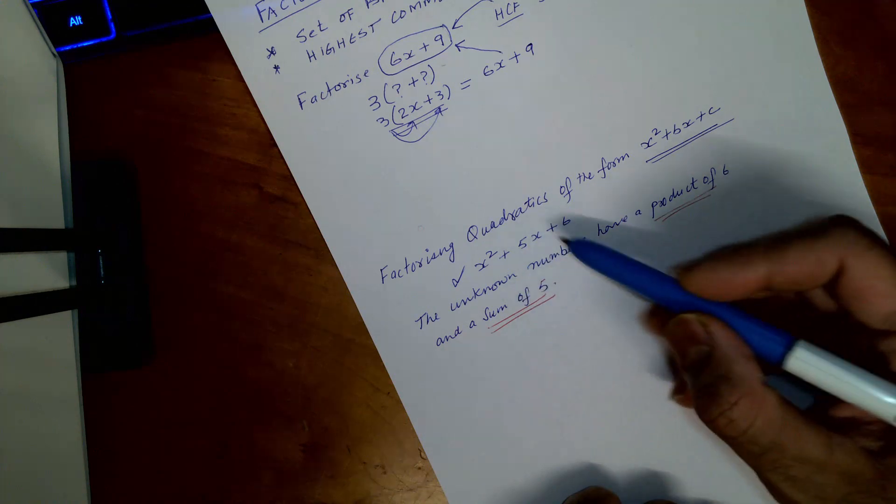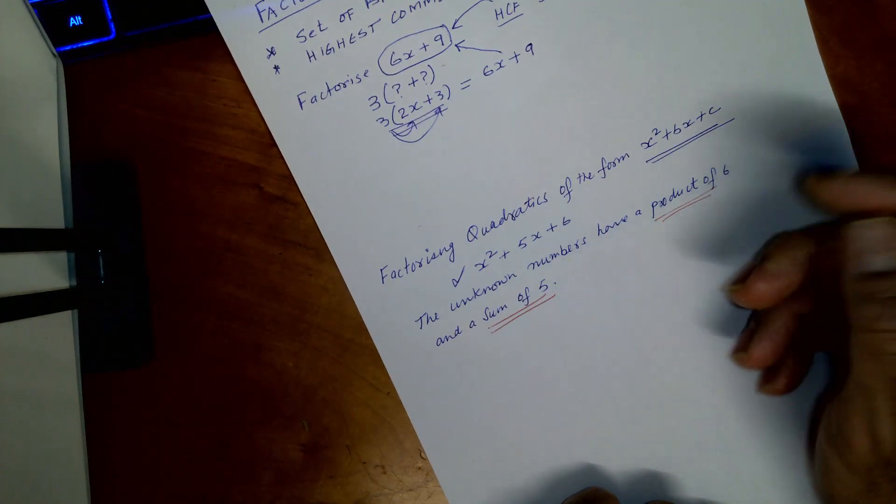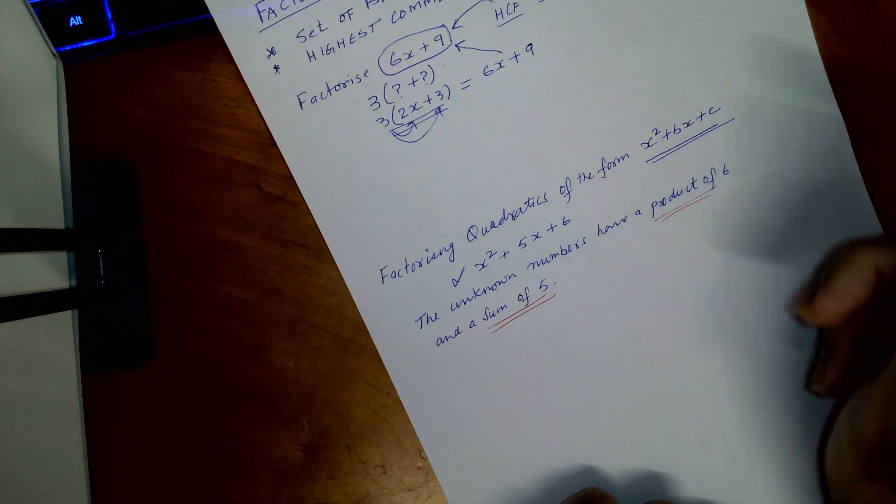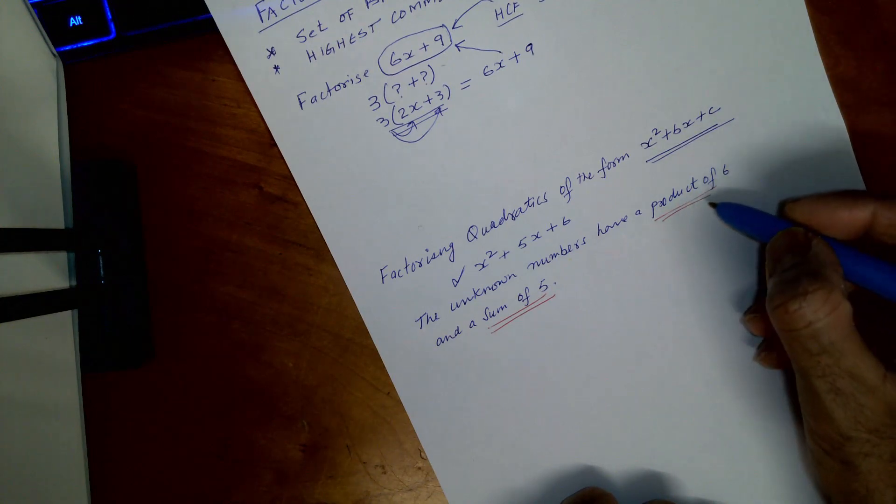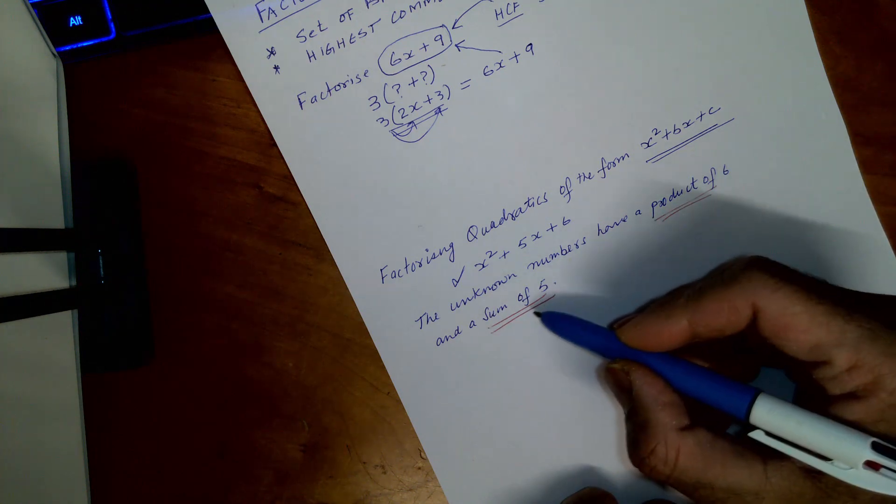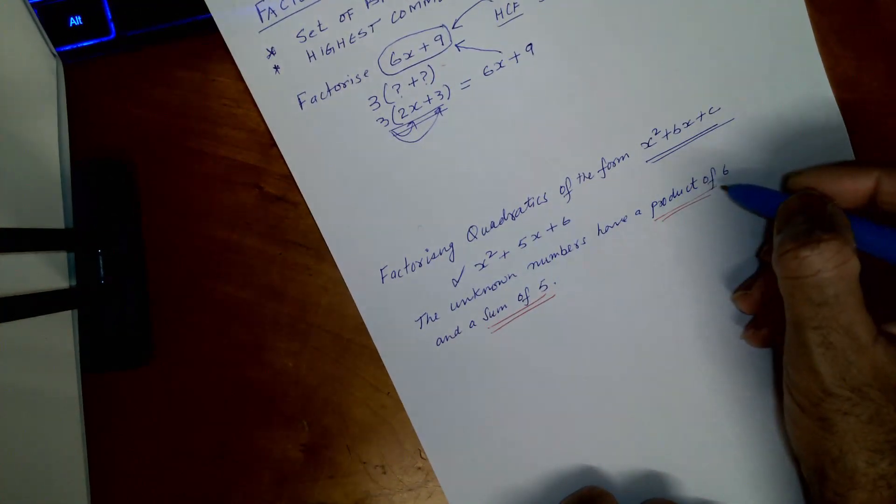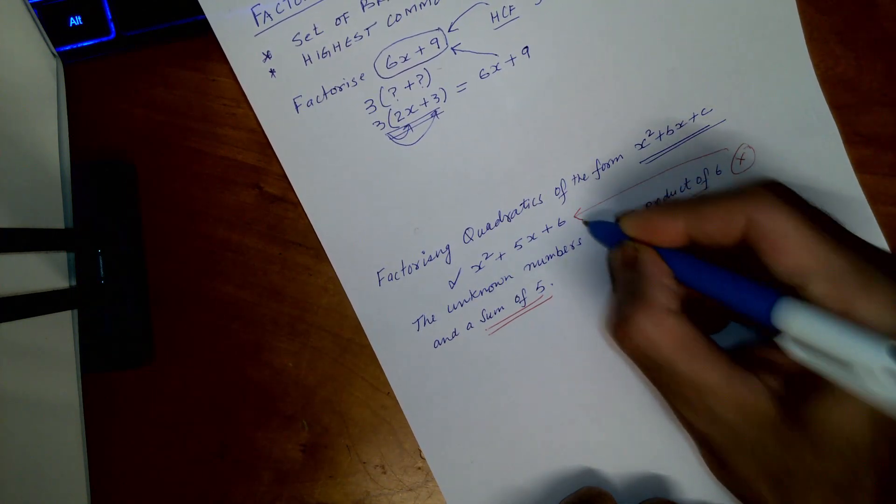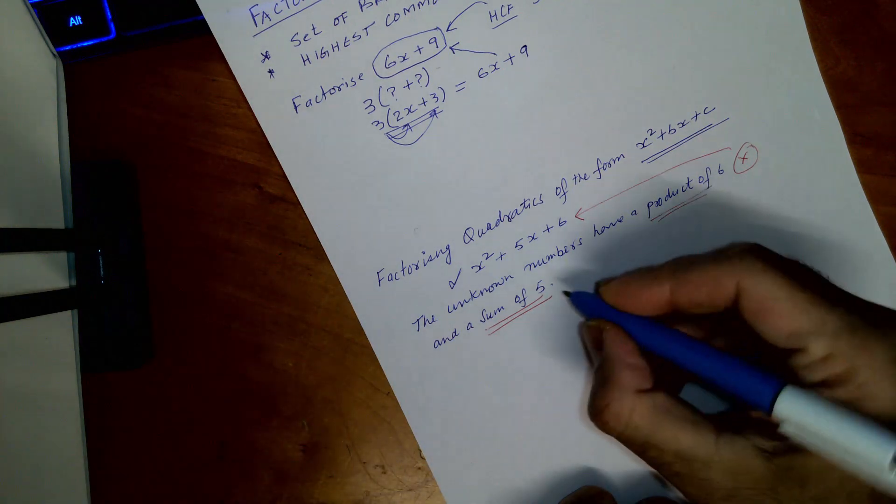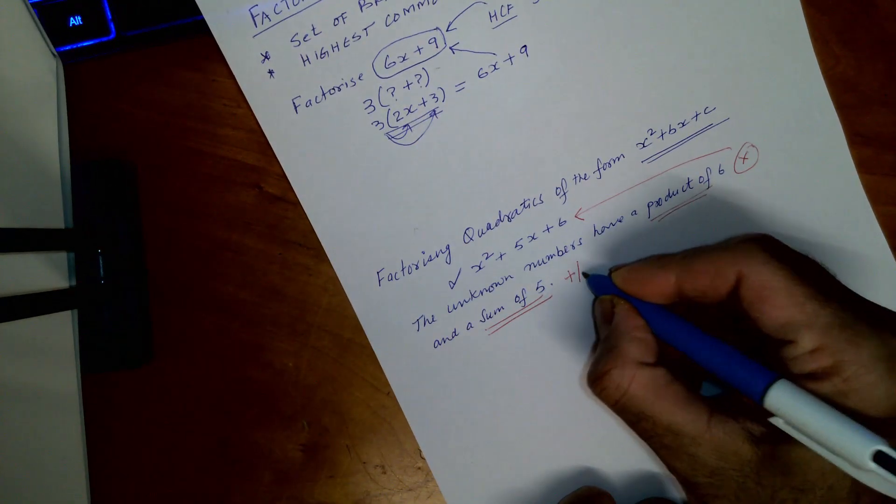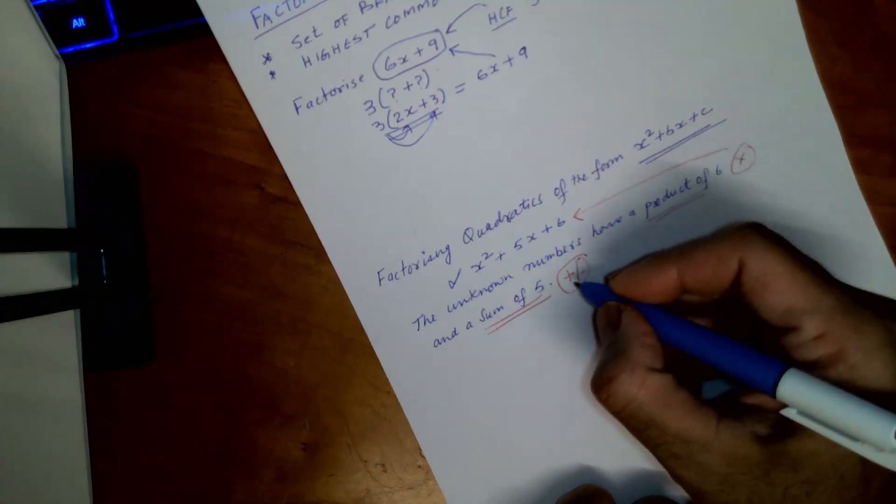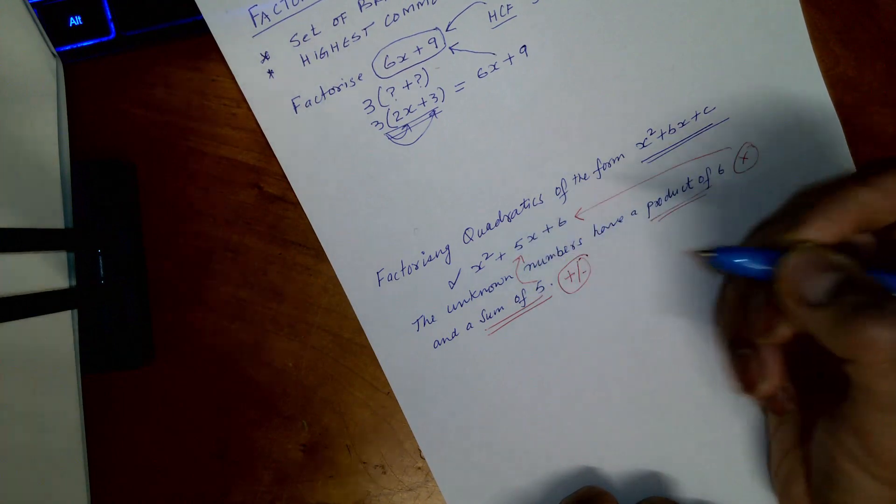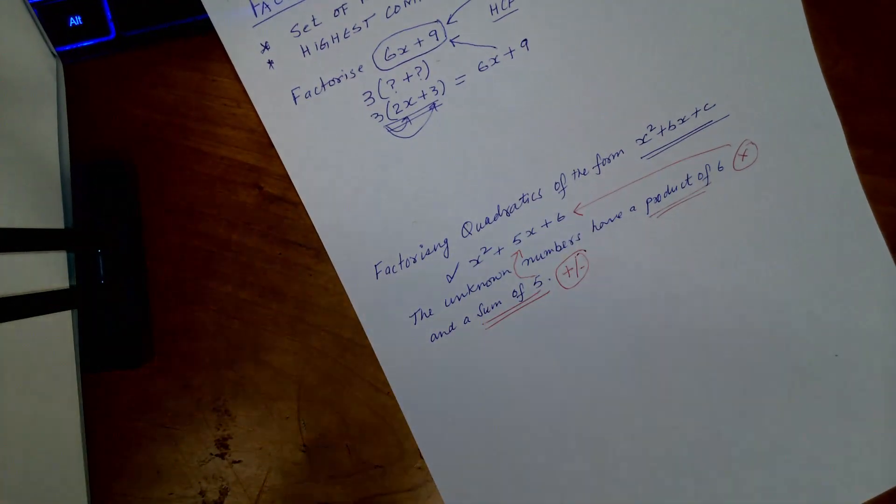So when we talk about unknown numbers which we need to find to solve this quadratic equation, you must have a number which product of 6, which means that if you multiply that two numbers, and the sum of that is 5. So which means if you multiply, that should give you 6, and if you add, that should give you 5x.